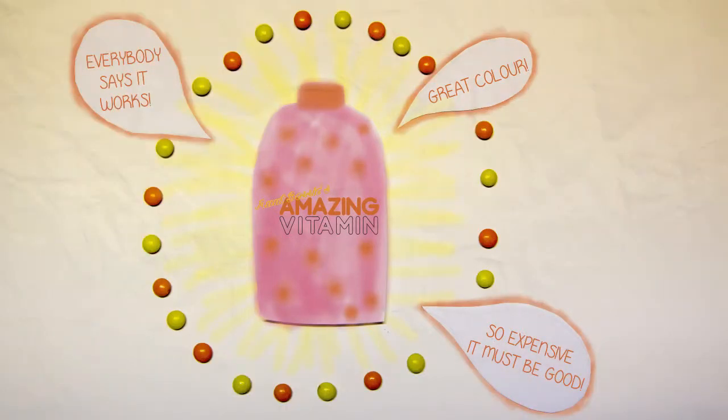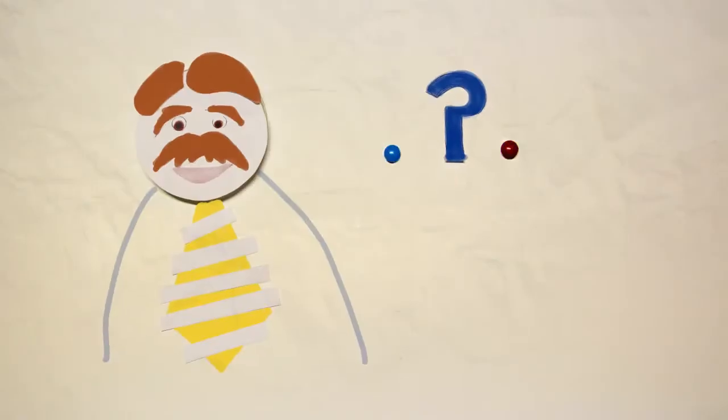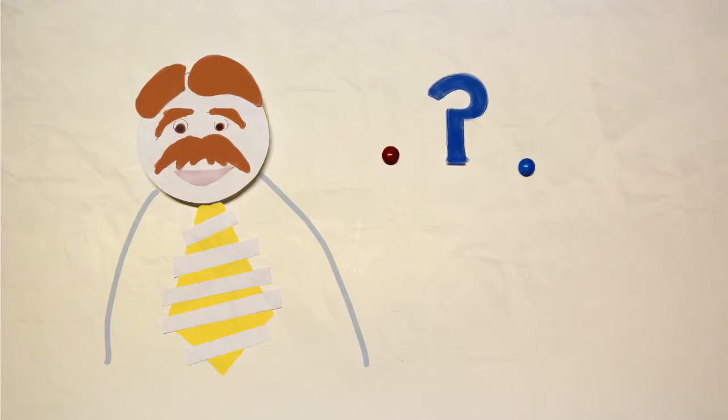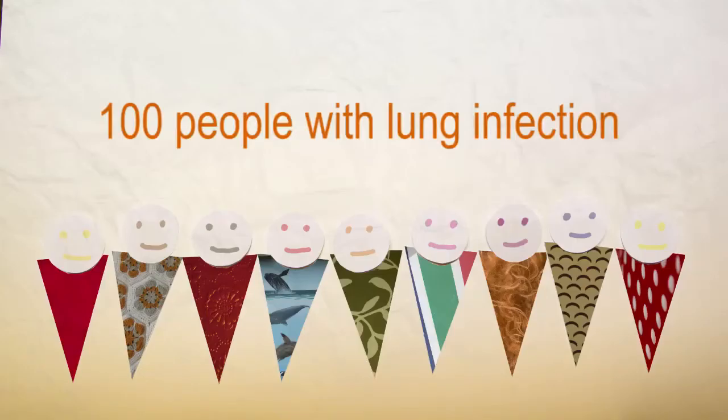Science does objective experiments to minimize bias. If a doctor wants to know if the blue or the red pill is better for lung infection, he asks 100 people with lung infection to take part in an experiment.